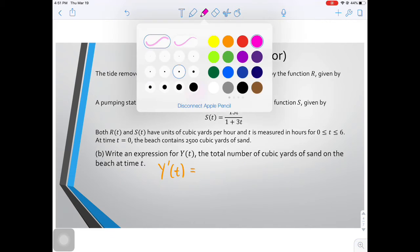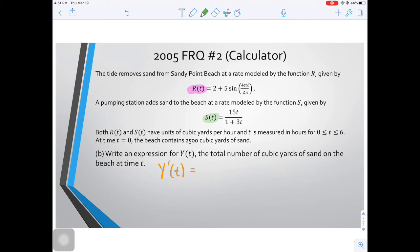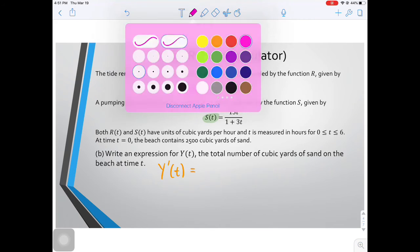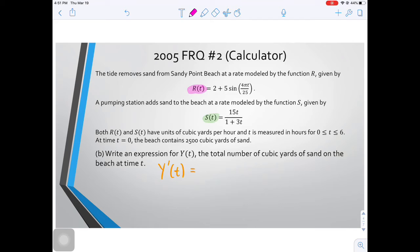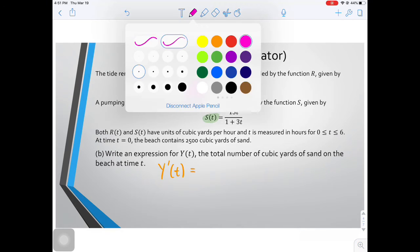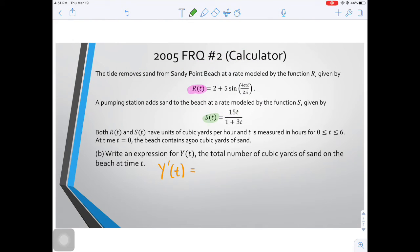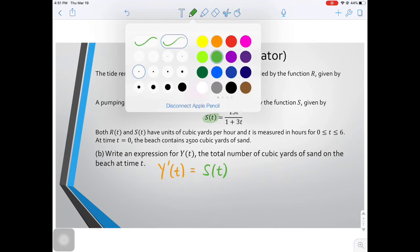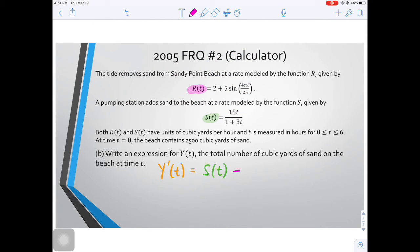When we're looking for Y prime of T, Y prime of T is the overall rate of change in the amount of sand on the beach. Like we've seen before, that's really just the rate coming in minus the rate going out. So the rate coming in is going to be S(t), that's the rate at which it is being added. And we are going to subtract the rate at which it is being removed from the beach, which is R(t). Now that's an expression for Y prime.